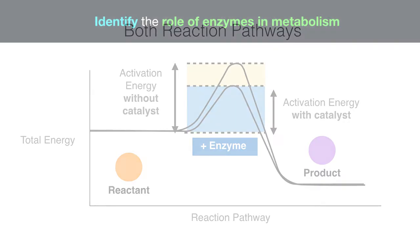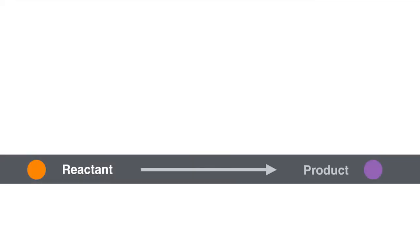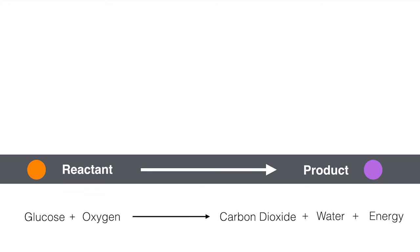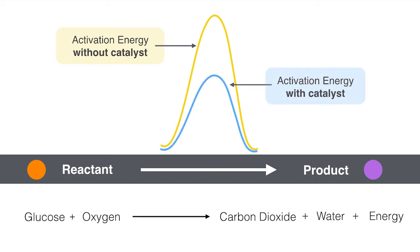To sum it up so far: enzymes are biological catalysts, they lower the energy needed to start a chemical reaction in a cell, and they help the body use less energy in transforming food into energy. For a general example, one reaction that occurs in our bodies is aerobic cellular respiration — glucose plus oxygen equals carbon dioxide, water, and energy. Looking at the slides, the yellow hump represents the activation energy needed without the catalyst, while the blue hump represents the activation energy needed with a catalyst. As you can see, the reaction is far more efficient when a catalyst is used.